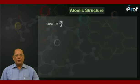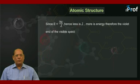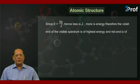Since E is equal to hc by lambda, hence less is lambda, more is the energy. Therefore, the violet end of visible spectrum is of highest energy and red end is of lowest energy within this spectrum.